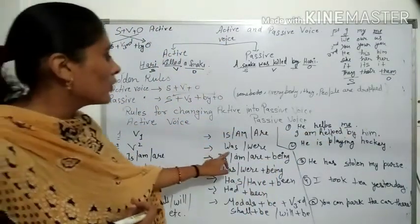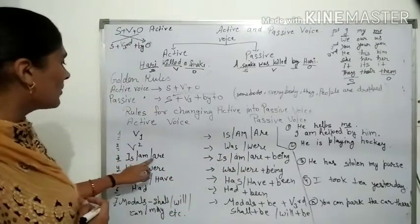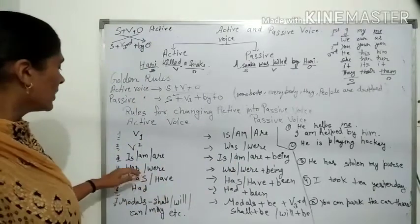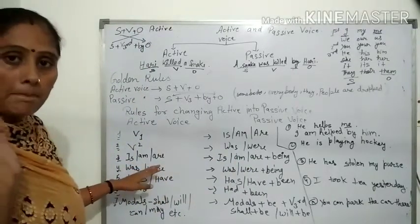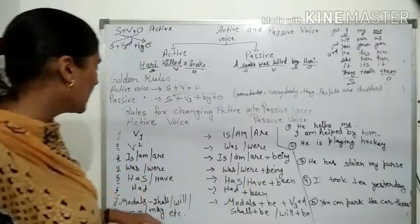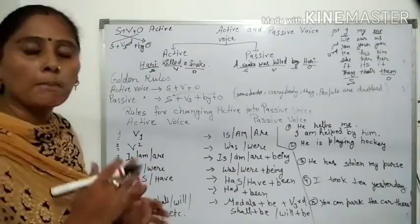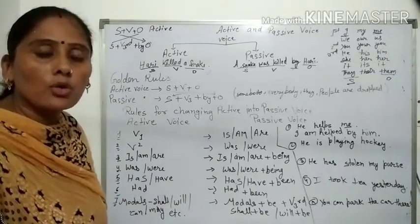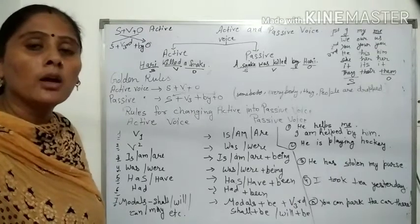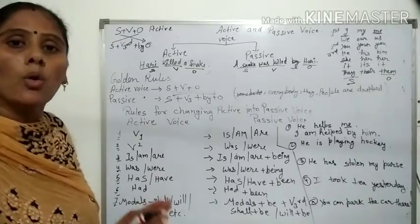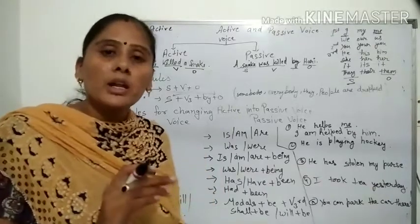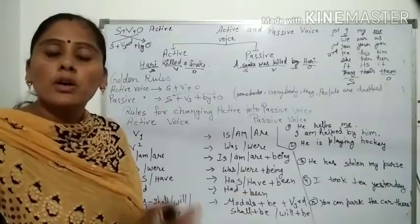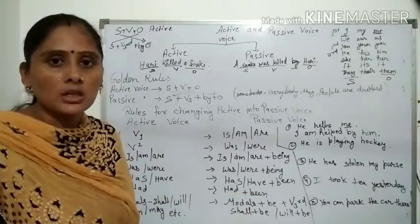यहाँ पर verb की second form है — was/were में change होती है, इसमें 'being' लगता है, फिर verb की third form। Past continuous tense में 'was/were + being + V3' होता है। Has/have/had दिया होता है तो उसके साथ 'been + verb की third form' लगती है। कोई भी modal auxiliary verb — shall, will, can, could, should, may, might — इनके साथ 'be + verb की third form' लगाकर passive voice में change करते हैं।